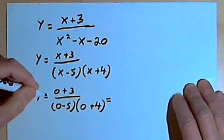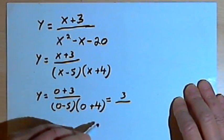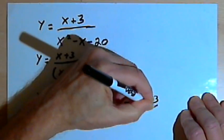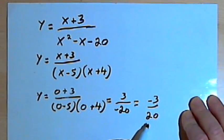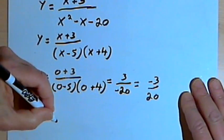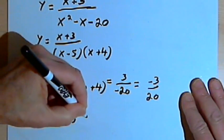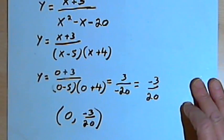And that just turns into 3 over negative 5 times 4 is negative 20. So I'll call that negative 3 over 20. That's the y-value. The x-value, of course, is 0. So the y-intercept is going to be at the point 0, negative 3 over 20.